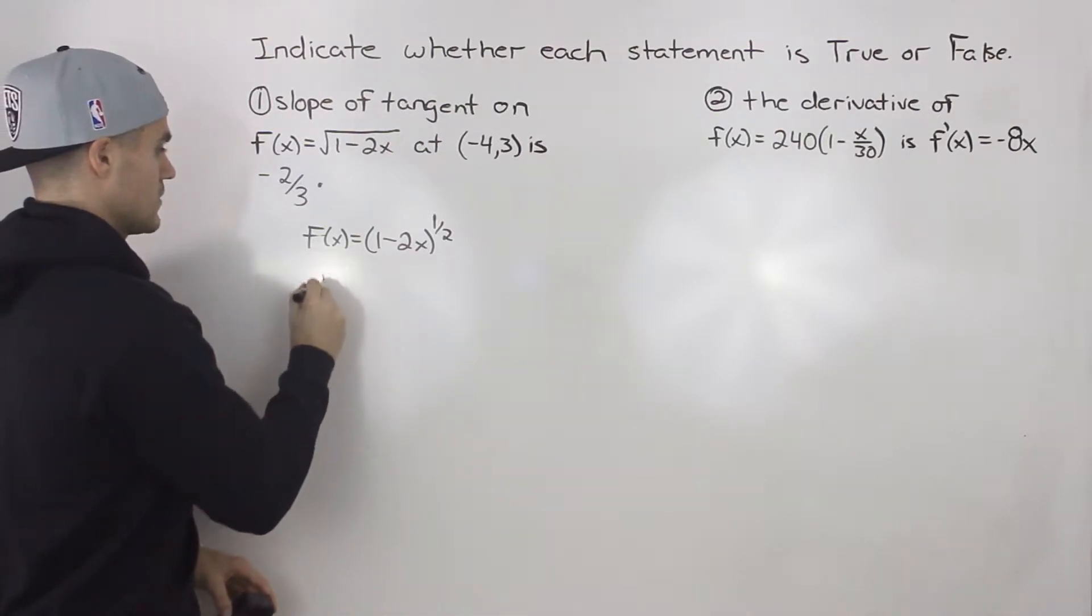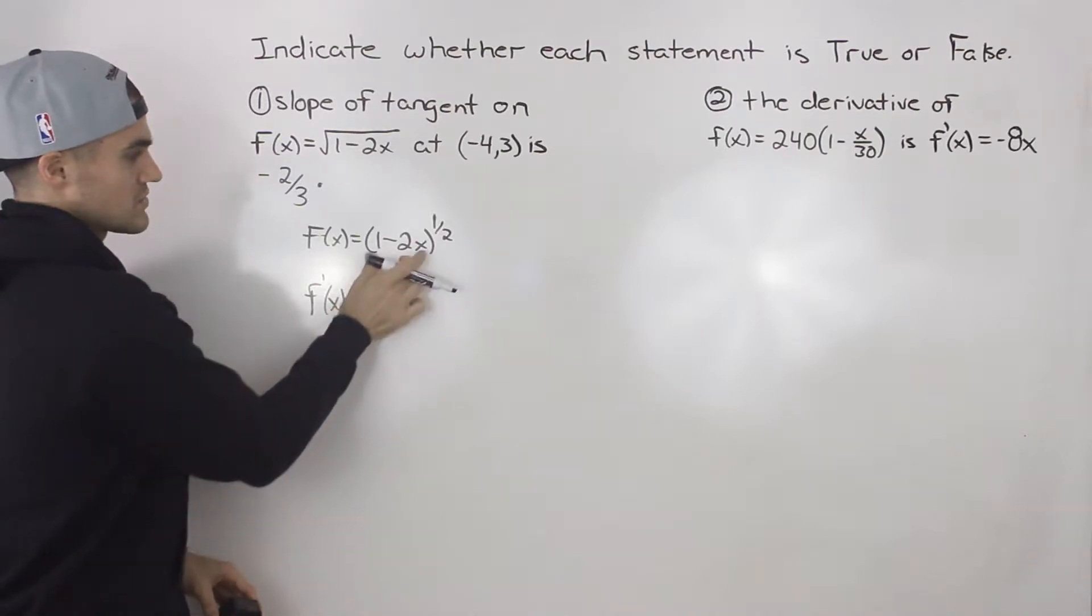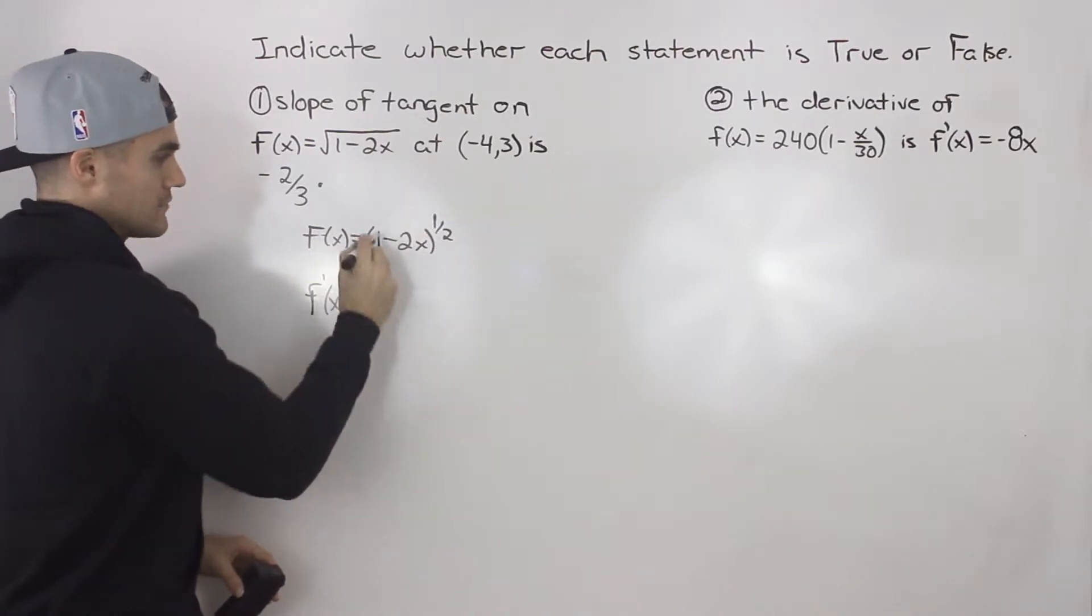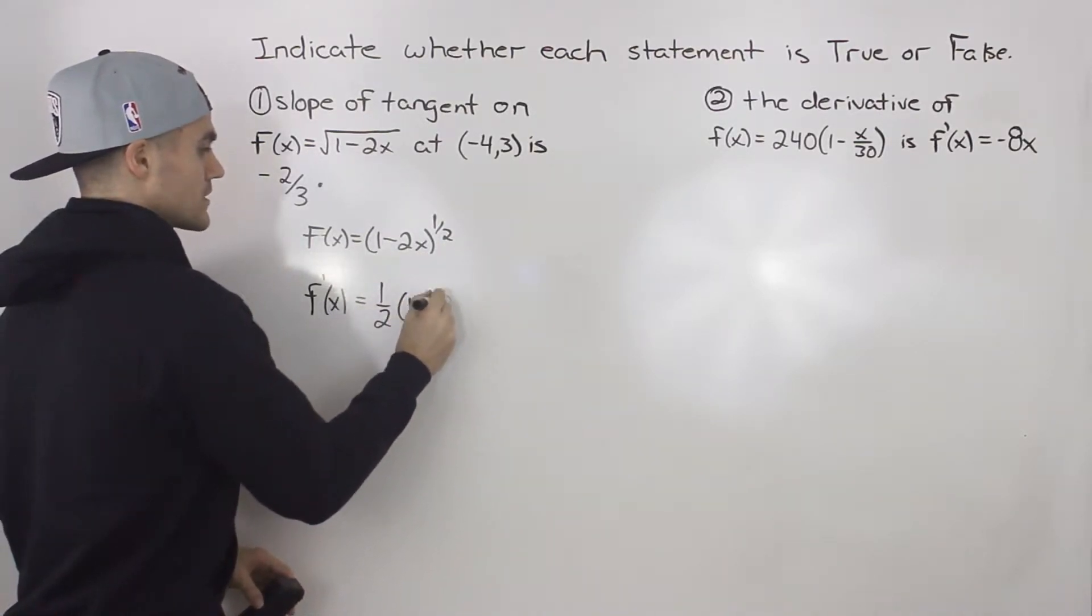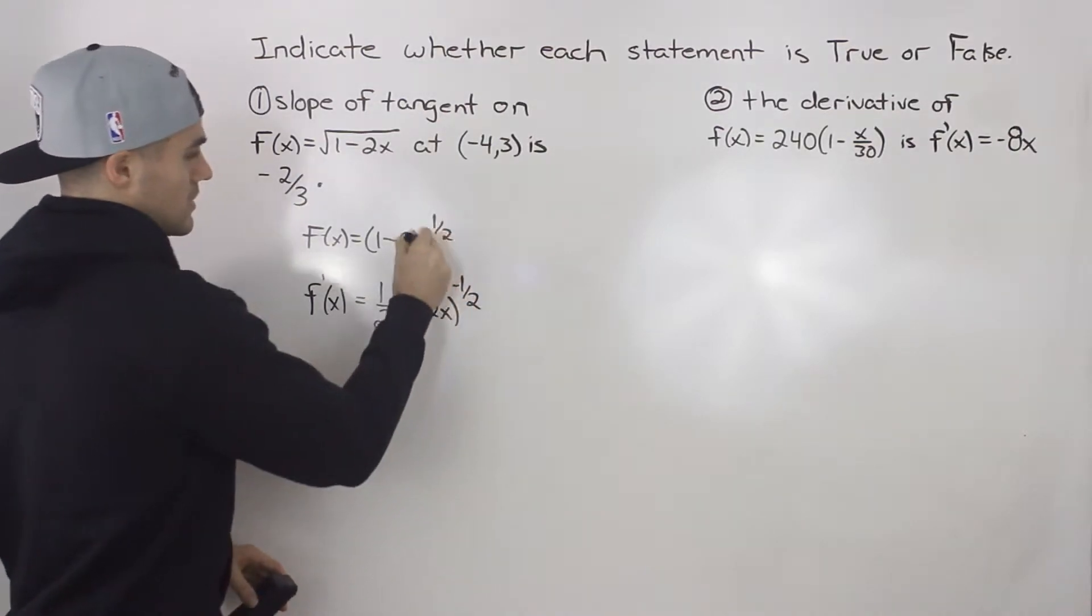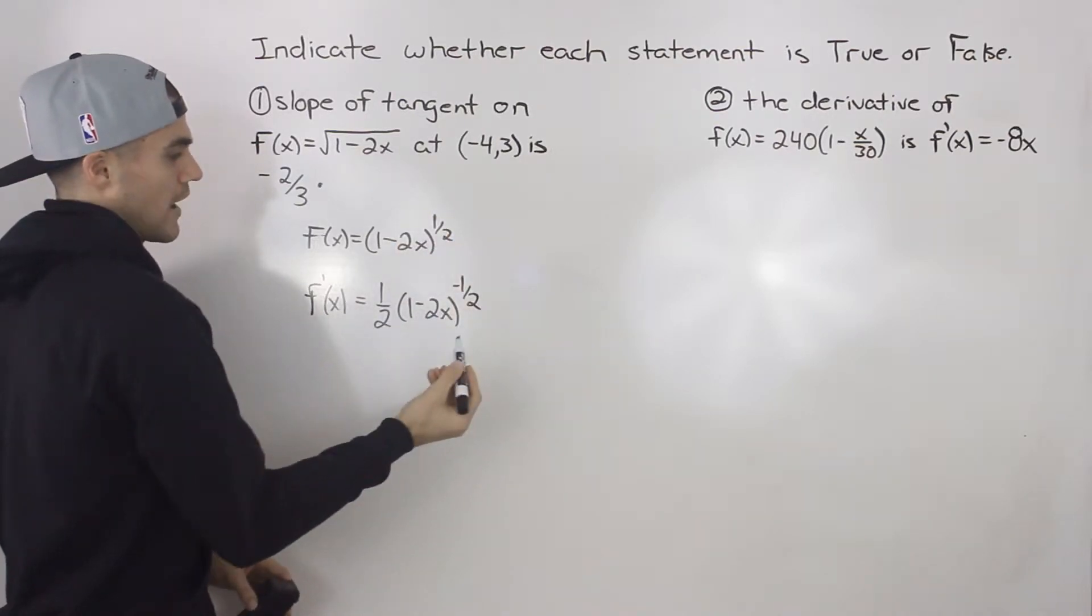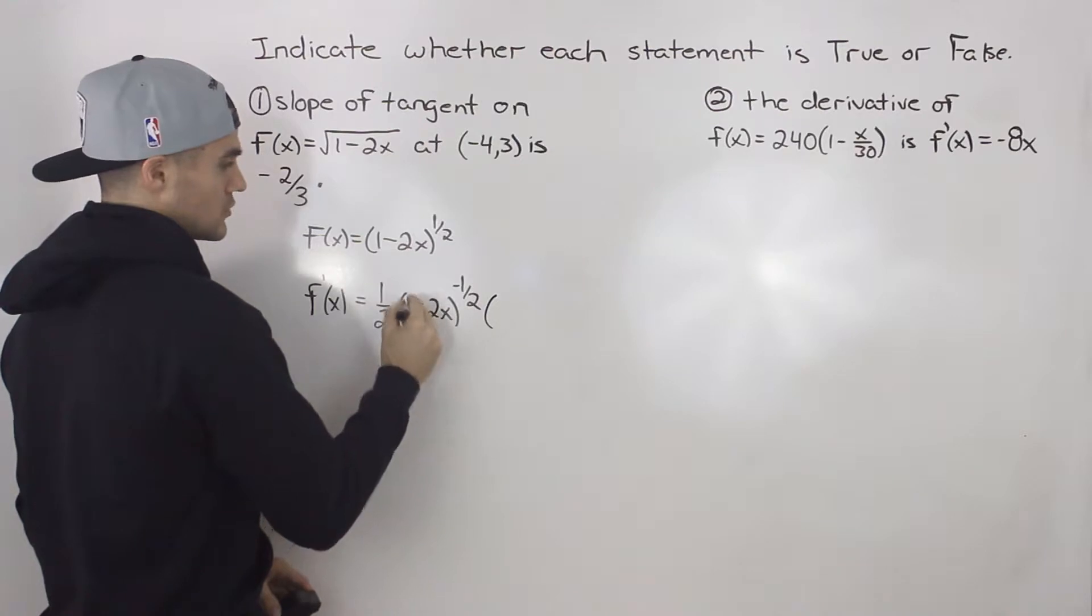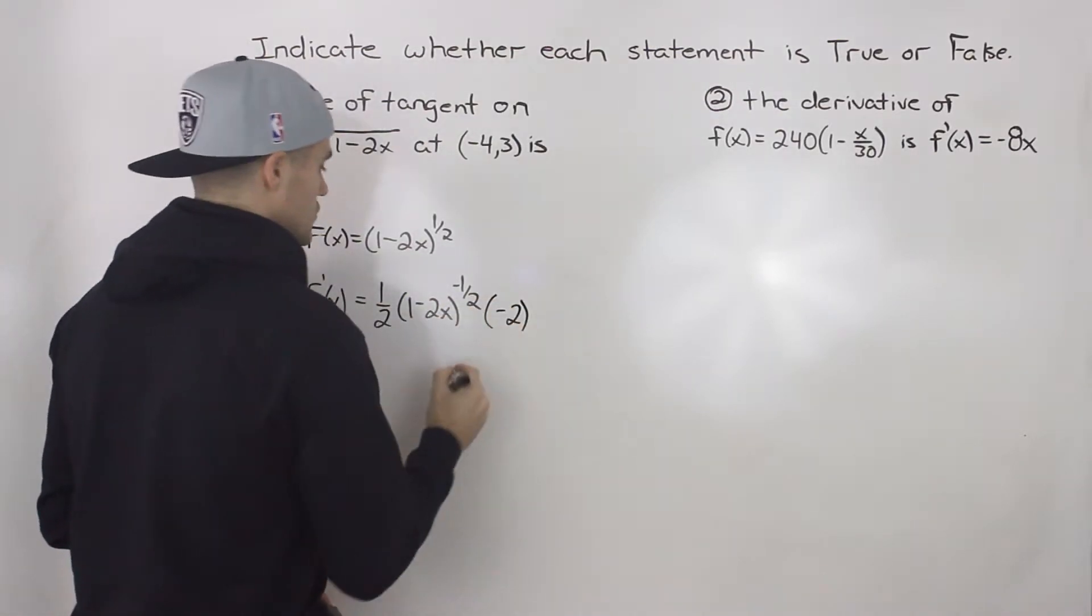When we take the derivative, we're going to have to do the chain rule. Notice that there's a function within another one. So the outer function is like this bracket to the power of a half. We bring the half down and we got (1 - 2x) subtract 1 from the exponent. 1/2 minus 1 is -1/2. Then we take the derivative of the inside bracket. So the derivative of 1 - 2x is just going to be -2.